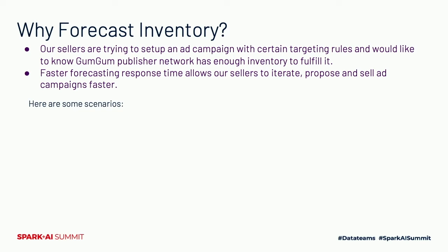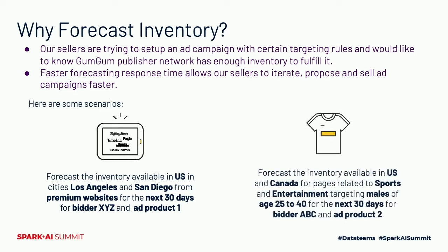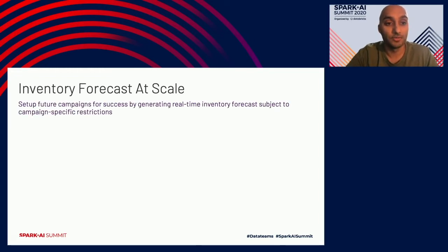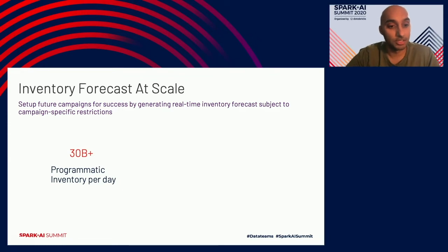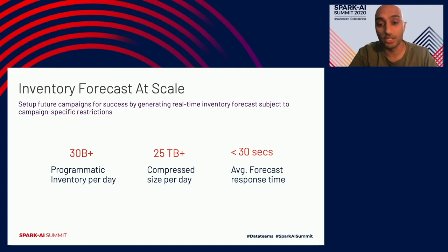Here's a scenario where we want to forecast inventory available in the U.S., in cities like Los Angeles and San Diego, from premium websites for the next 30 days. Another scenario could be forecasting inventory in the U.S. and Canada for pages related to sports and entertainment, targeting males aged 25 to 40. The scale we're talking about is roughly 30 billion-plus programmatic impressions every day — about 25 terabytes of compressed data per day — with a goal of providing average forecast response time of 30 seconds.